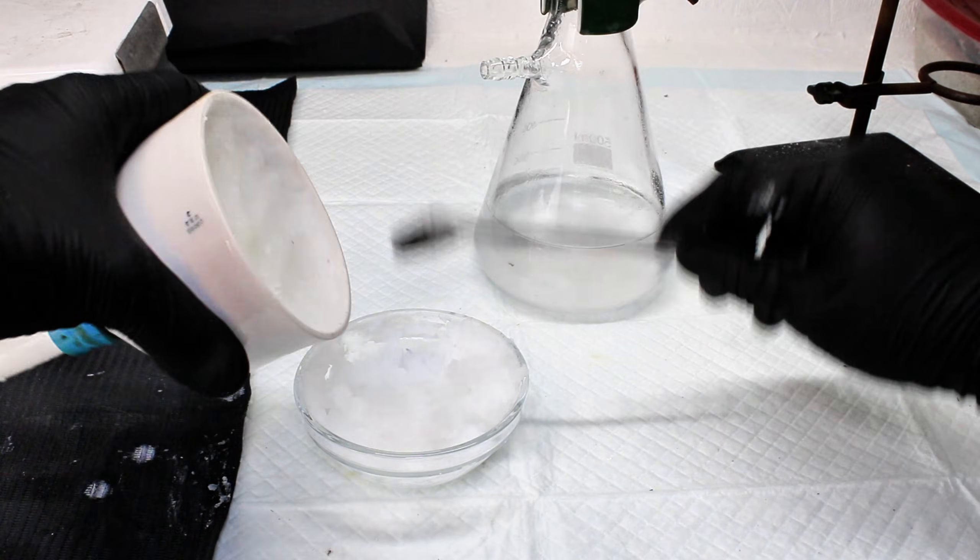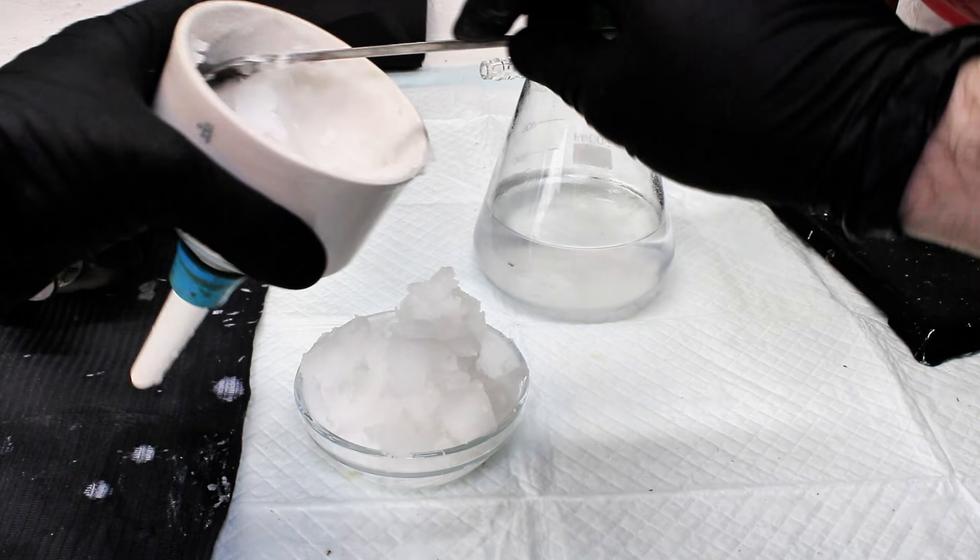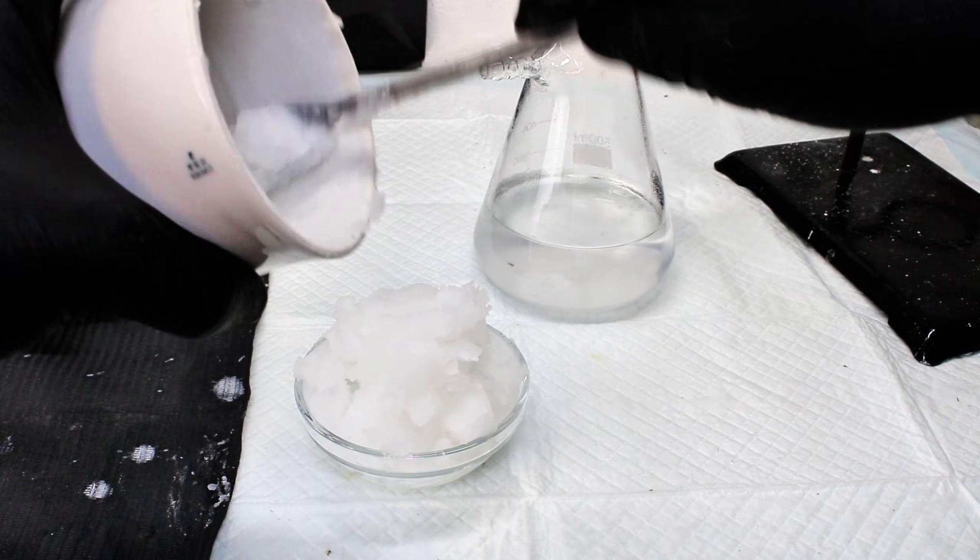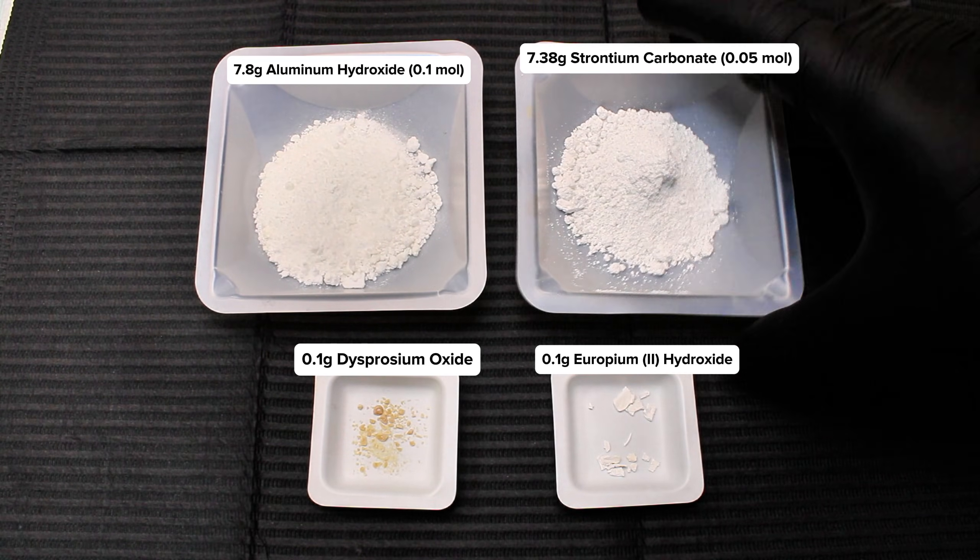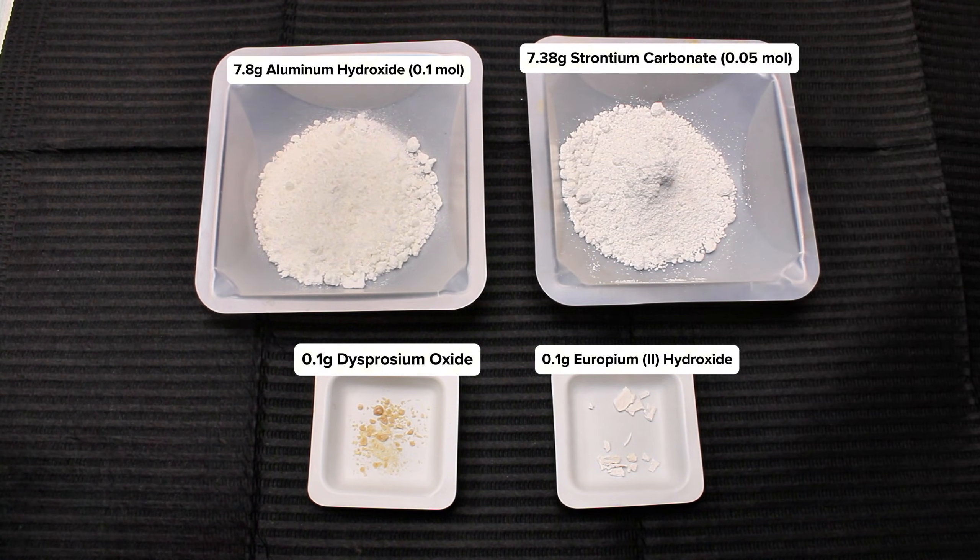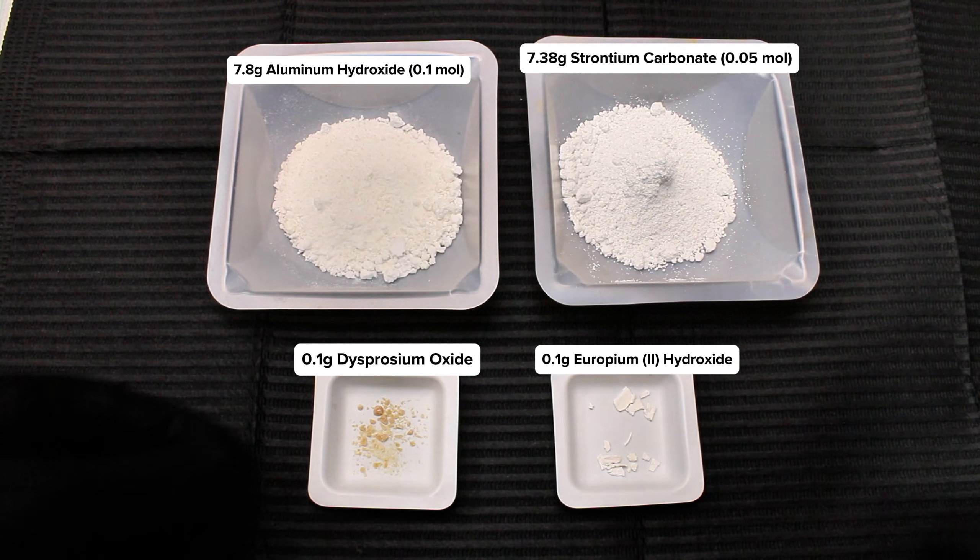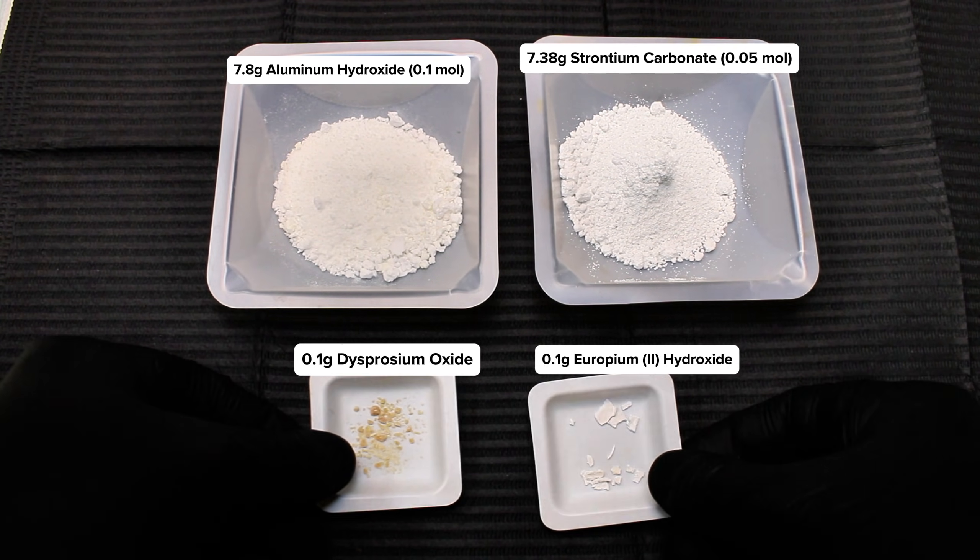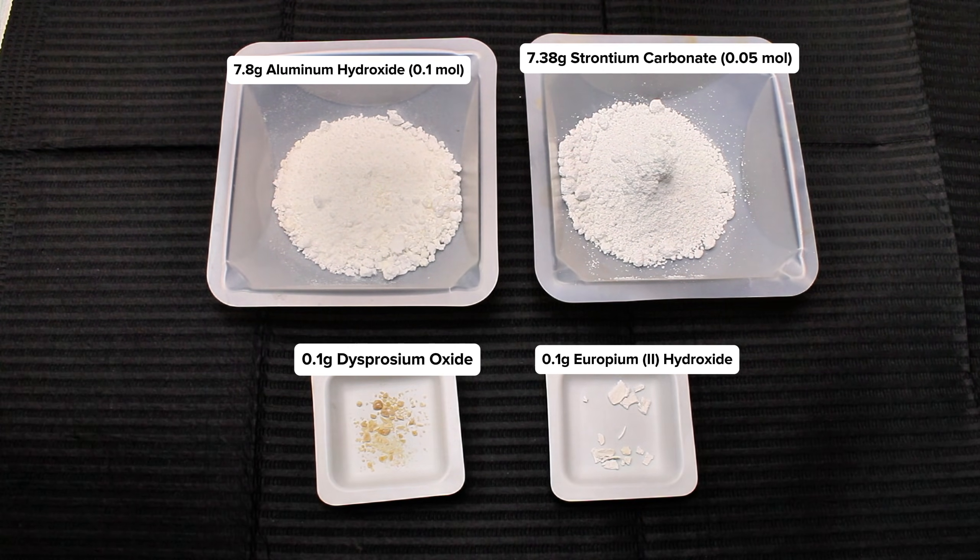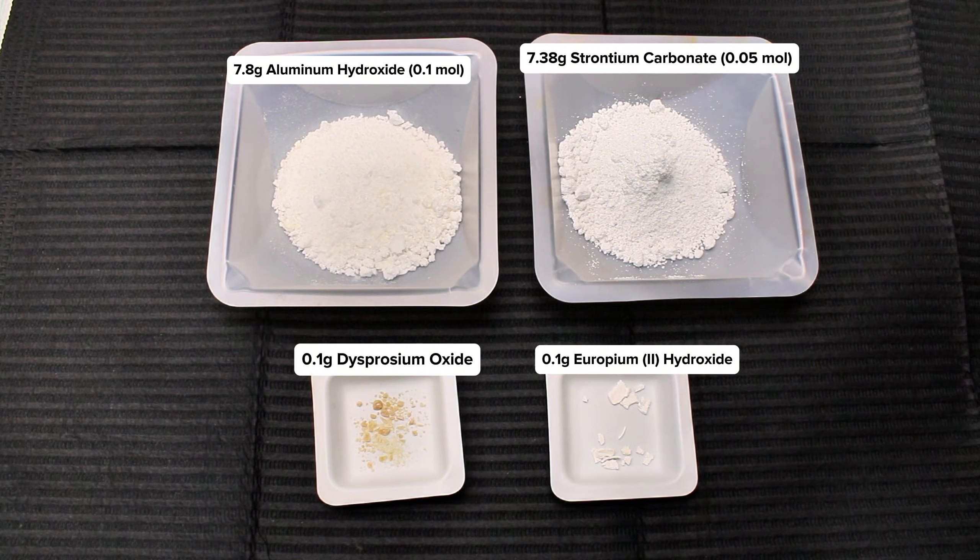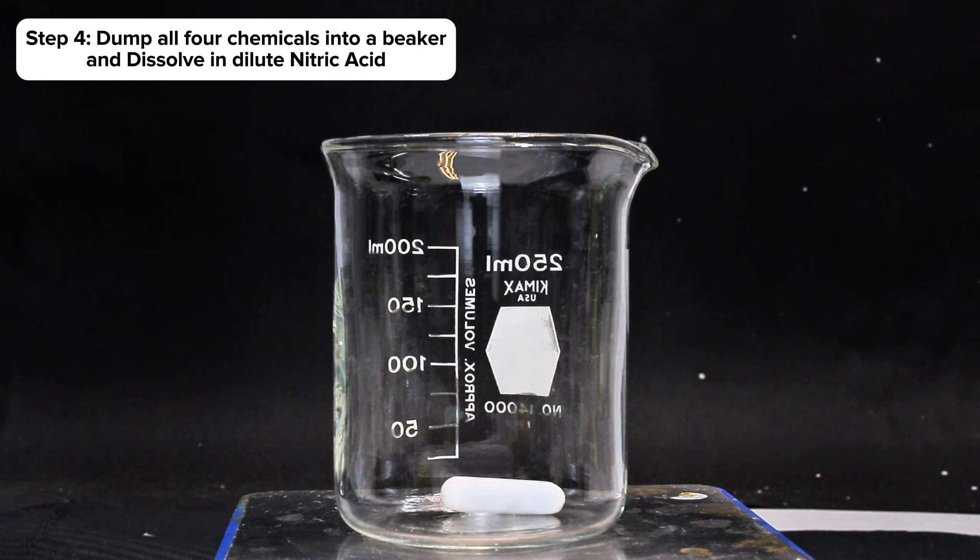This was next scooped into a dish and dried under vacuum desiccation for a few days. After it was completely dry, the aluminum hydroxide was powdered and 7.8 grams were weighed out. I then weighed out 7.38 grams of strontium carbonate, as well as 0.1 grams of dysprosium oxide and another 0.1 grams of europium hydroxide. These were all transferred to a new beaker along with some water, and to this I added nitric acid under constant stirring until no more bubbling occurred.